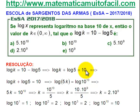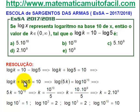A gente vai ficar confuso para resolver. O importante é ter nos dois membros, no primeiro membro e no segundo membro, tudo em forma de logaritmo. É isso que eu vou tentar fazer. Então, log de K mais log de 5 é igual a 10.